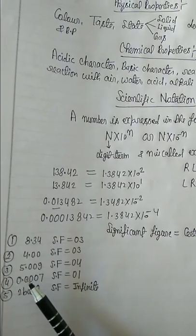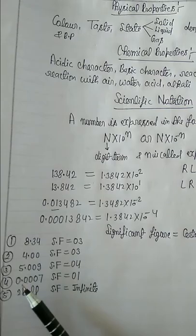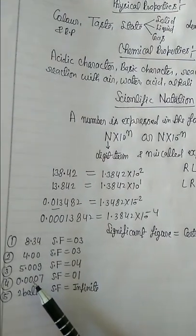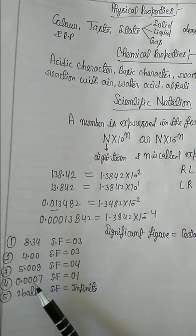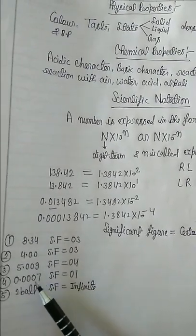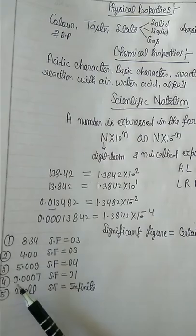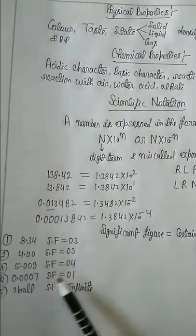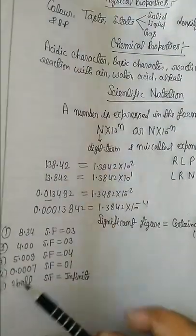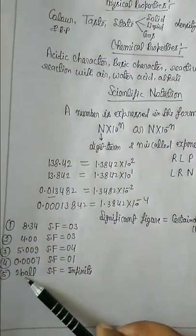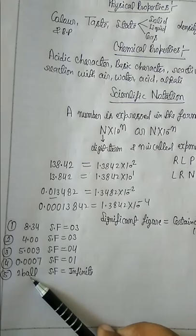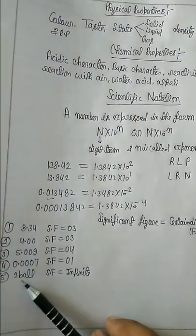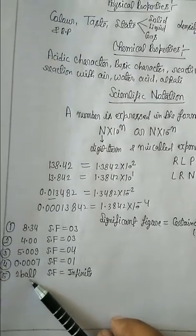Rule number four: all zeros before the first non-zero digit are not significant. In the given data, the non-zero digit is 7, and there are 3 or 4 zeros before it, so we take only 1 significant figure. Rule number five: exact numbers have an infinite number of significant figures. For example, 2 balls is an exact number, so its significant figures are infinite. Similarly, 20 chairs is an exact number, so its significant figures are also infinite.